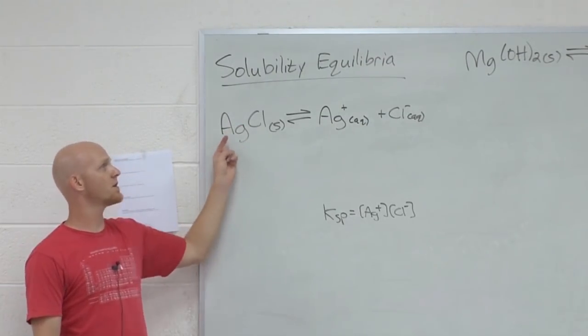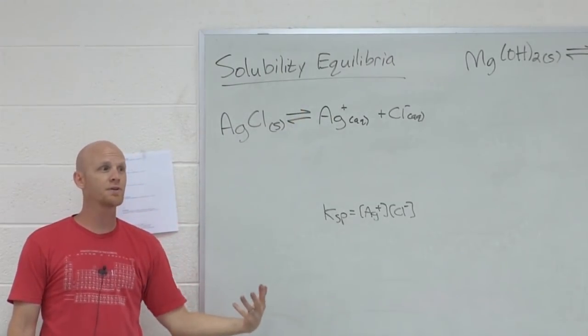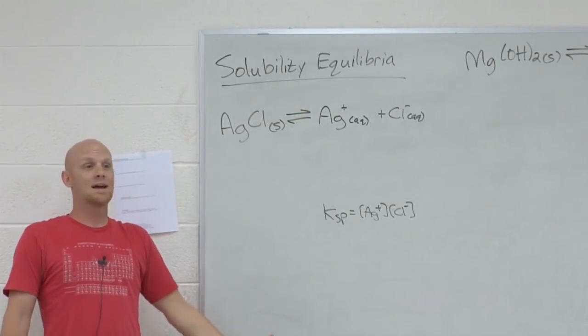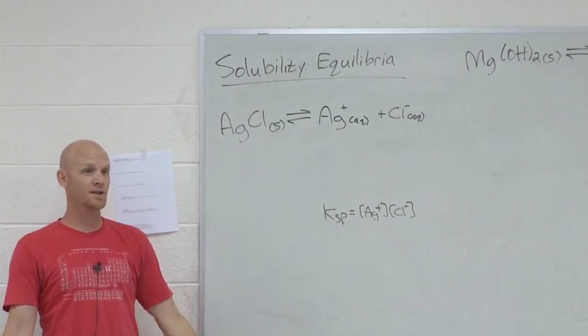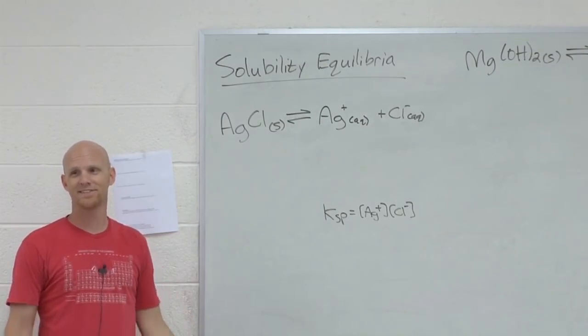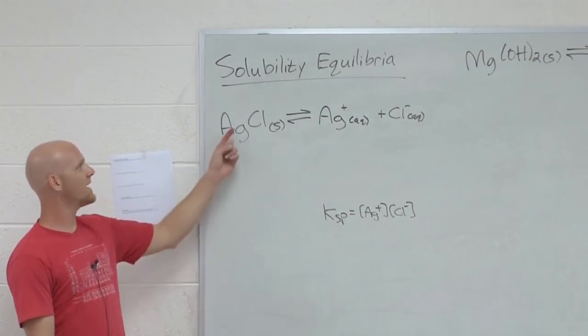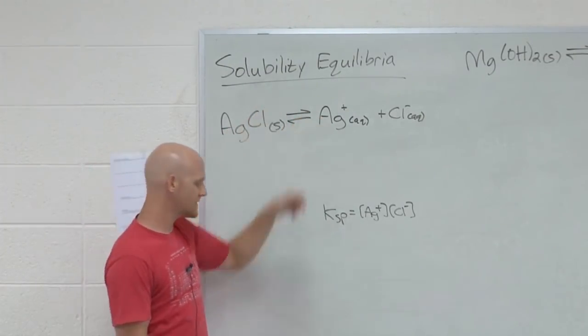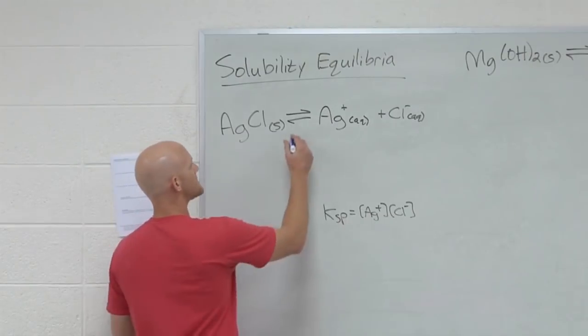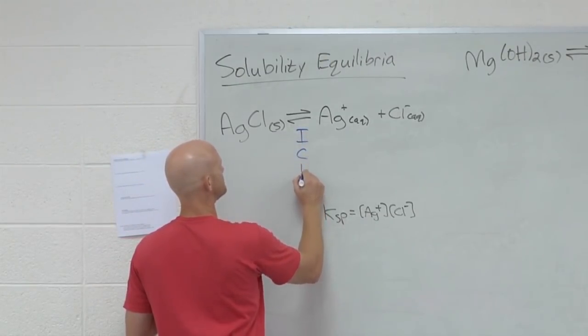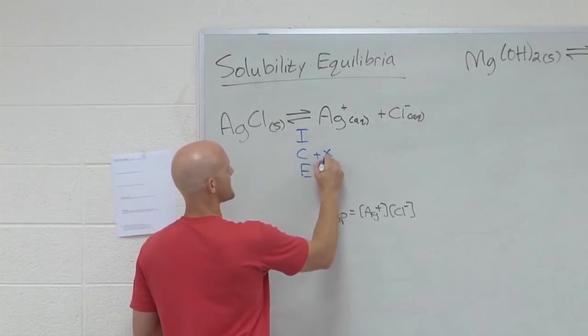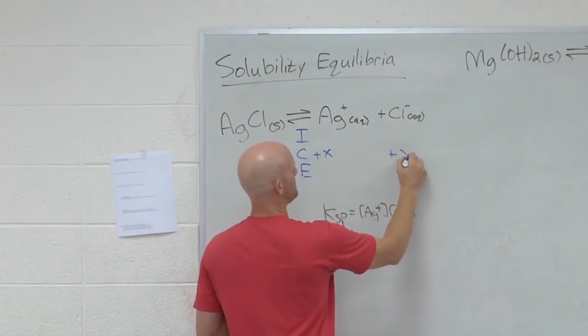But the amount that dissociates is called the solubility. Just whatever concentration of solid dissolves, that's the solubility, or more properly, the molar solubility. And since I don't know how much that is, guess what we call it? X. We're just going to call it X. Don't know what it is, so we call it X. And if an X molar concentration of AgCl dissociates, how much silver ions will I form? Plus X in chloride? Plus X.